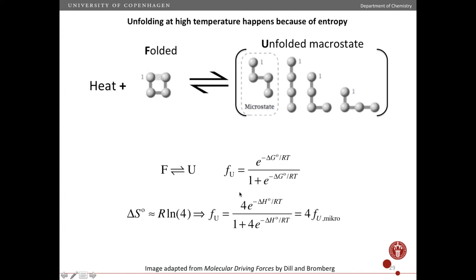So that means this expression for the fraction of protein that is in the unfolded state can be written like this, where the four comes from the degeneracy. That means the fraction of proteins or polymers in one of these unfolded states — the fraction in the unfolded macrostate — is just four times the probability of being in one of the microstates, for example this one. And since they have equal free energy, the probability of being in each one of these microstates is equal. So if we multiply the probability of being in this state by four, we get the probability of being in the unfolded macrostate.